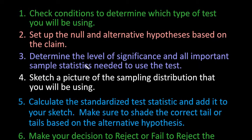It's also important to identify all of your sample statistics that you need to use the test. If you're using a test for the mean, then you need to know your sample mean and either your sample standard deviation or your population standard deviation depending upon the test. If it's a test for proportions, you're going to need to know your p-hat. Your sample statistics depend on the test that you're going to do, and I have videos that show you specifically how to do each of the different types of tests.